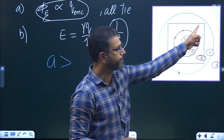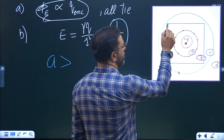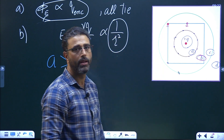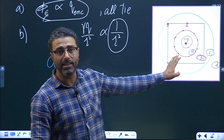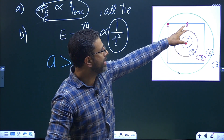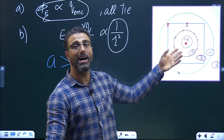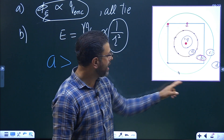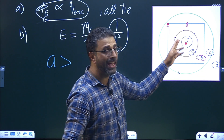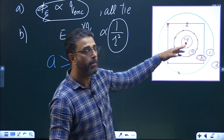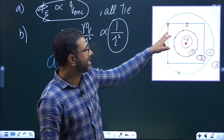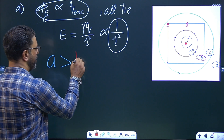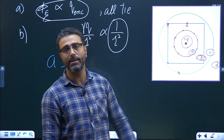Next consider the cubical Gaussian surface B. Consider any point on it — the closest point and the farthest point on the cube. Compared to all other surfaces, points on B are at greater distances than points on A, but at smaller distances than points on C and D. So the electric field on B will be less than A but greater than that of C and D.